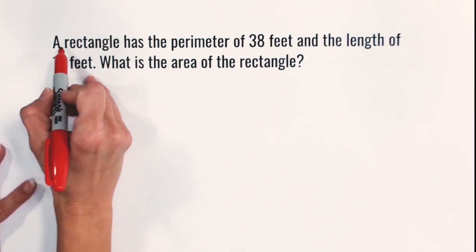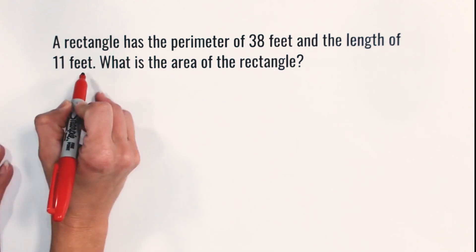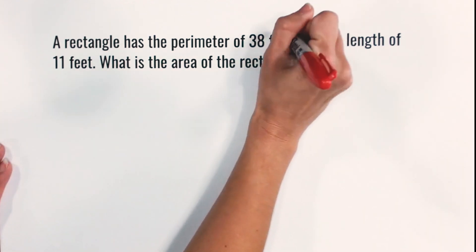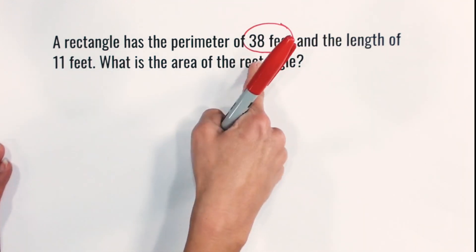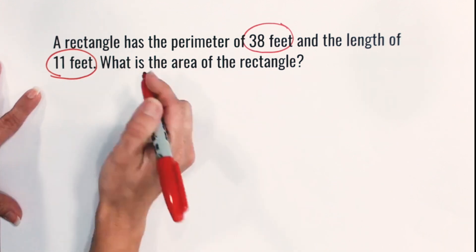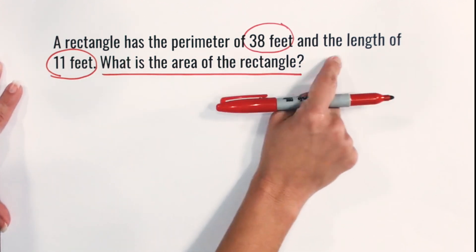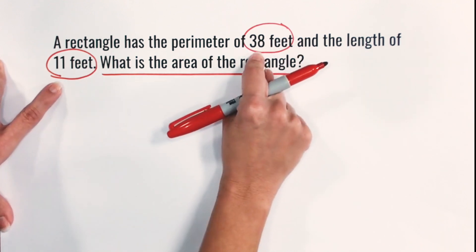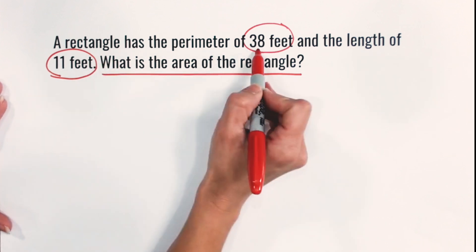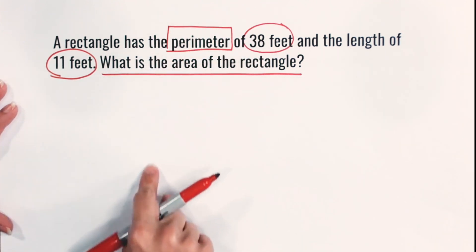In this first example, a rectangle has the perimeter of 38 feet and the length of 11 feet. What is the area of the rectangle? So we have 38 feet as one of our numbers and then we have 11 feet as our other number and we're talking about what is the area of the rectangle. But it's not giving us the length times the width. So we're not going to be multiplying 11 feet times 38 feet because this 38 feet applies to the perimeter and that's the distance around the shape.